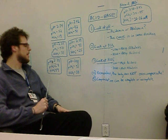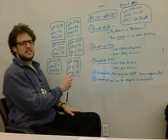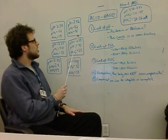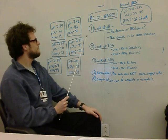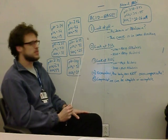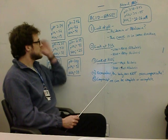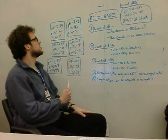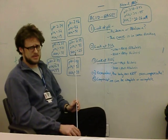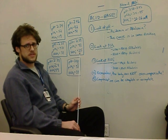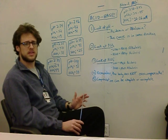Next one: pH 7.46 — a little high, so alkalemia. pCO2 is 42, which is in the normal range. Bicarb is 31 — high bicarb is a metabolic alkalosis, and it's going in the same direction as the pH. This one is pretty easy: this patient has an uncompensated metabolic alkalosis. It's uncompensated because the pCO2 is in the normal range — they haven't adjusted their breathing to deal with this at all.